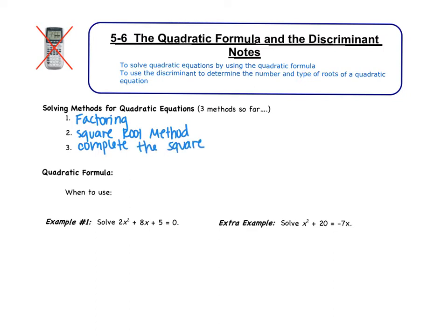For all three of these methods, they work in very specific situations. There are certain quadratic equations where you can factor, but you can't use the square root method. Sometimes you can complete the square so that you can use the square root method. There are some quadratic equations though, that these three methods don't work for, or at least not easily. That's where the quadratic formula is going to come into play.